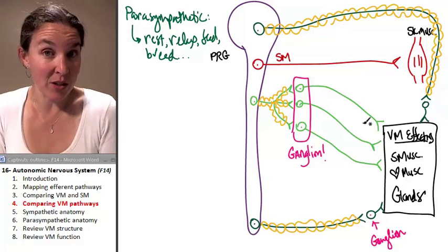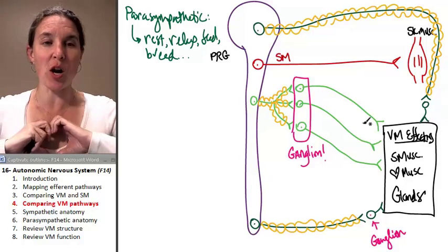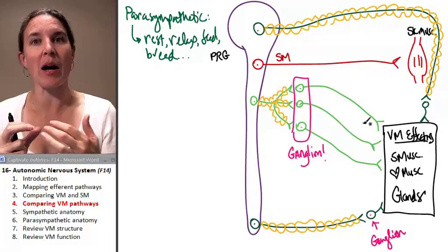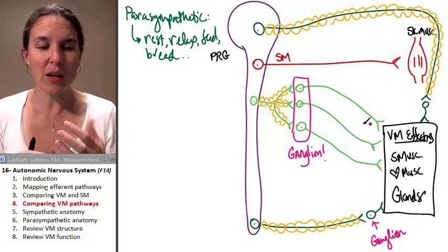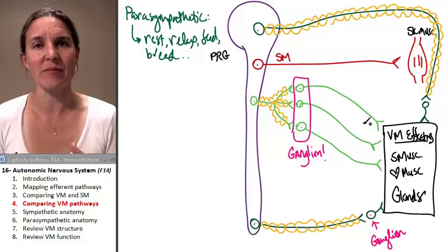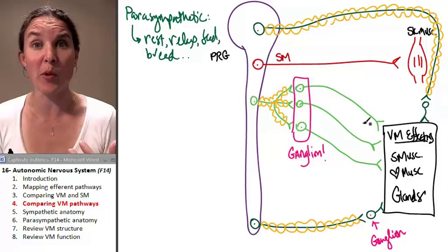And remember that all of our visceral motor pathways innervate the same effectors. So for example, your heart, when it's innervated by a parasympathetic pathway, it'll slow your heart rate. Things will get more mellow. Your blood pressure will drop.